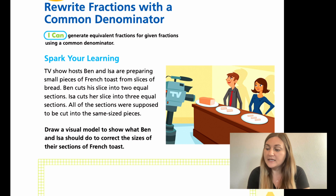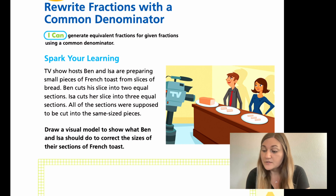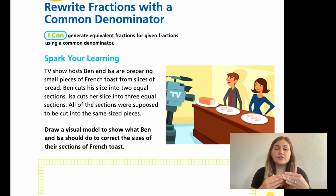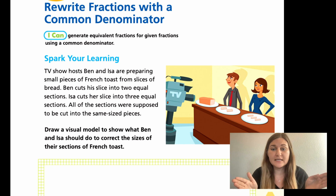It says TV show hosts Ben and Isa are preparing small pieces of French toast from slices of bread. Ben cuts his slice into two equal sections, and Isa cuts her slice into three equal sections. All the sections were supposed to be cut into the same sized pieces. So draw a visual model to show what Ben and Isa should do to correct the sizes of their sections of French toast. This is where equivalent fractions comes into play.